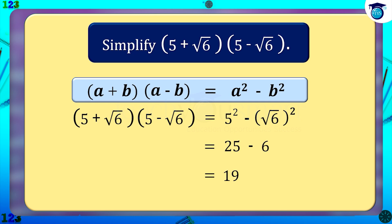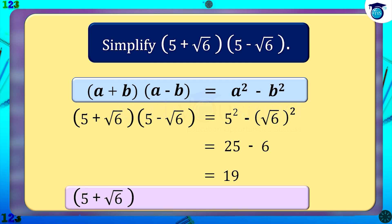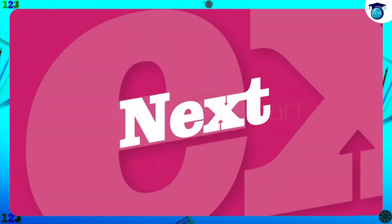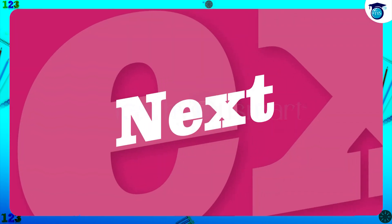That is, (5 + √6) multiplied by (5 − √6) equals 19. Next,